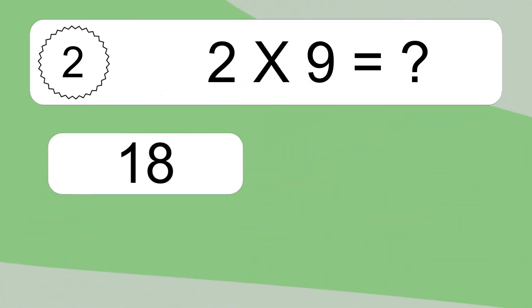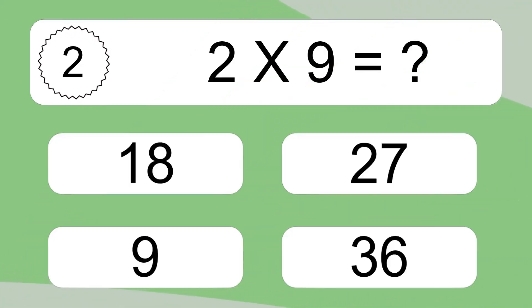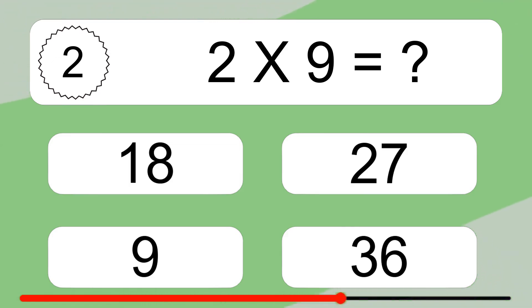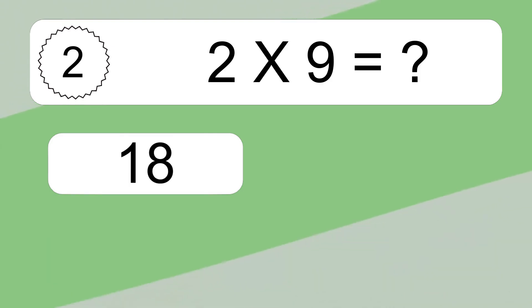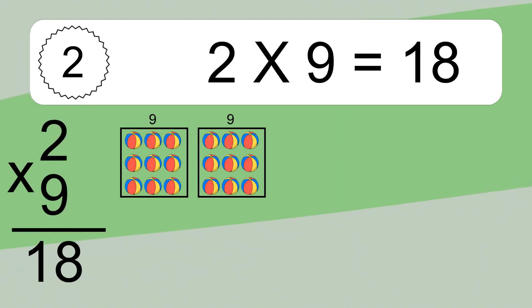2 times 9 equals what? 2 times 9 equals 18.